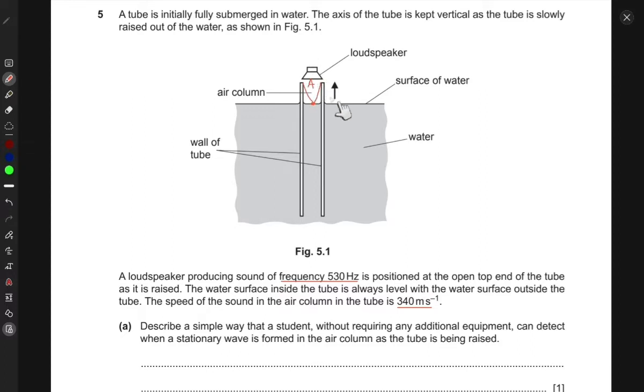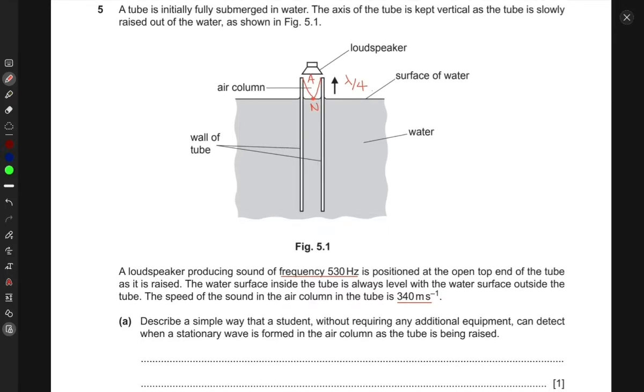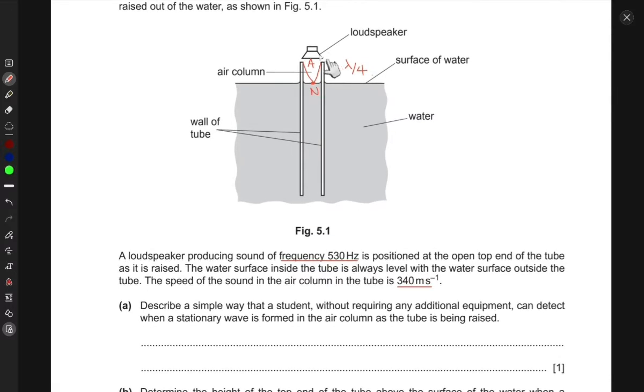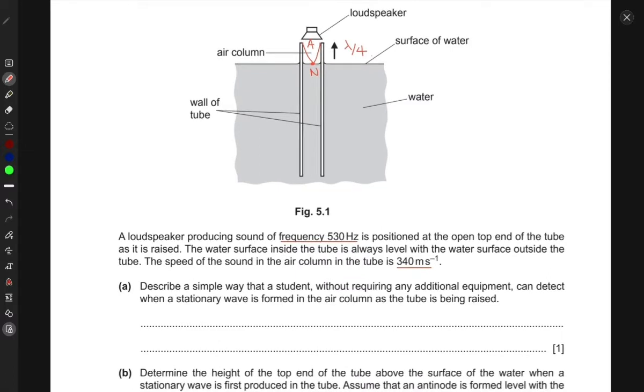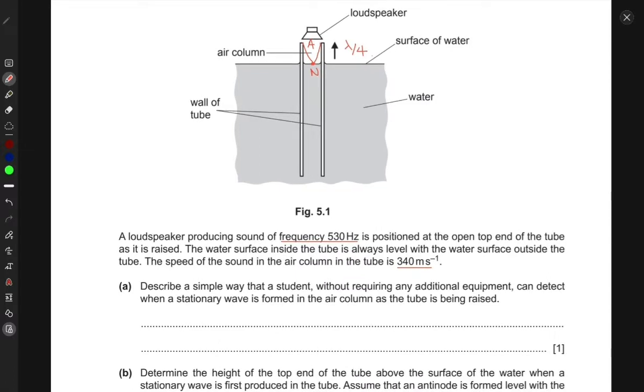At the top it's an antinode and at the end it's a node. This distance is lambda over four. Now, how can he tell when a stationary wave is formed? When the stationary wave is formed, you would hear a loud noise because of this node. A loud noise can be heard, and that's when you would know that a stationary wave is formed.